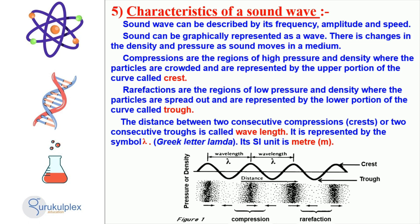The distance between two consecutive compressions or between two consecutive troughs is referred to as the wavelength and is symbolized by the Greek letter lambda. The International System of Units unit for wavelength is meter.